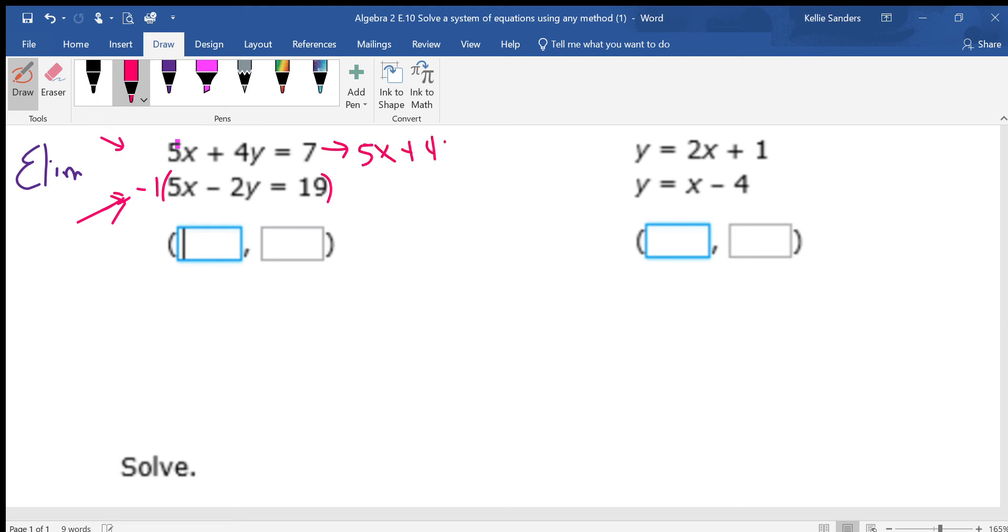Become a positive 5x plus 4y equals 7. I'm putting a negative through this one so everything changes signs. So the negative 2 becomes a positive 2. 19 becomes negative 19. And the x's go away. 4 plus 2 is 6. Negative 19 plus 7 is negative 12. Divide by 6. And y equals negative 2.